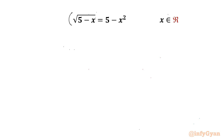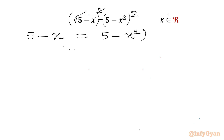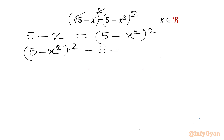I will consider squaring both sides. The square root and square will cancel on the LHS. I can write 5 minus x equal to (5 minus x²)². Now I will take all the terms to the RHS, so (5 minus x²)² minus 5 plus x equal to 0.